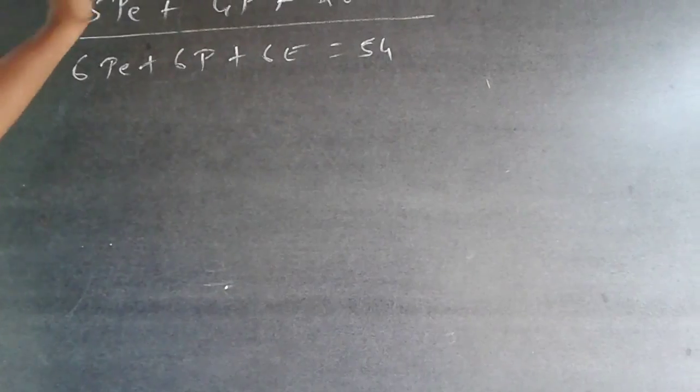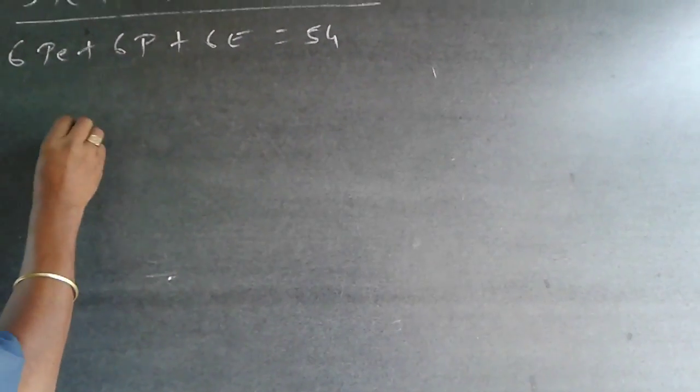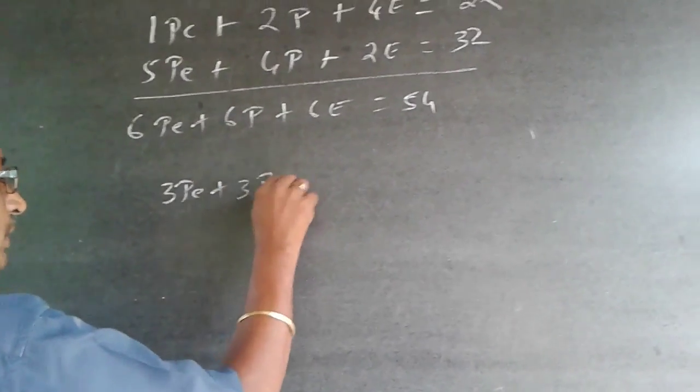But what is ours is three plus three plus three. So divide it by two. When I divide this equation by two, it will be three pencils plus three pens plus three erasers.